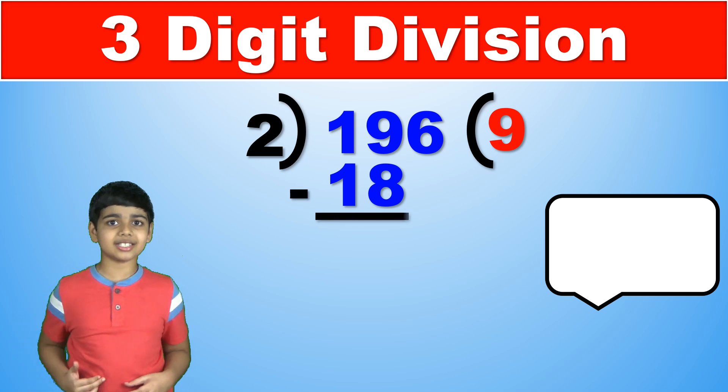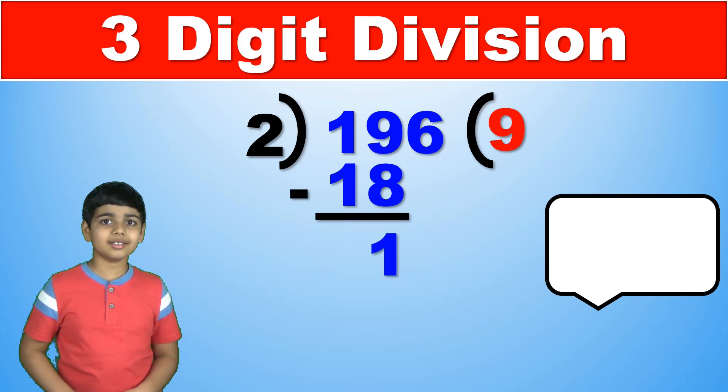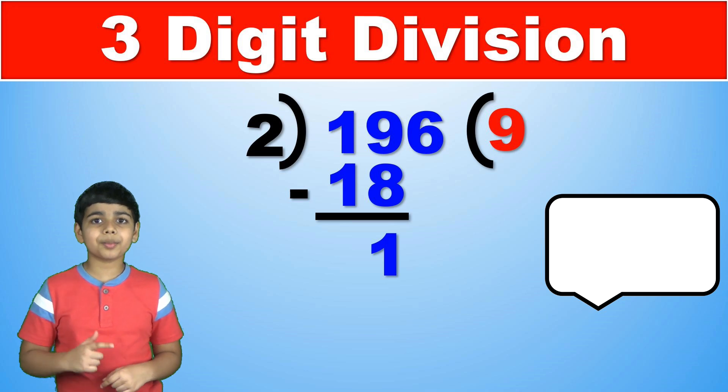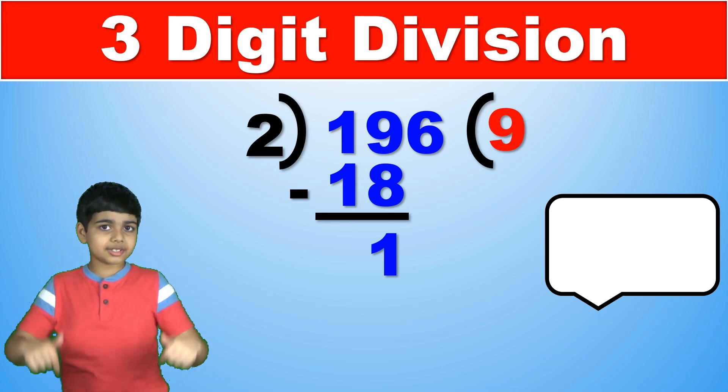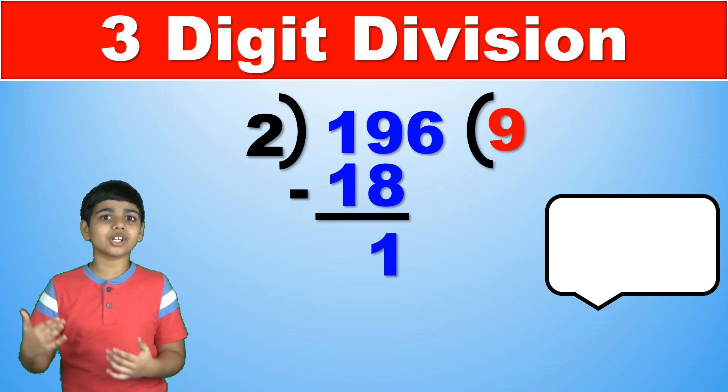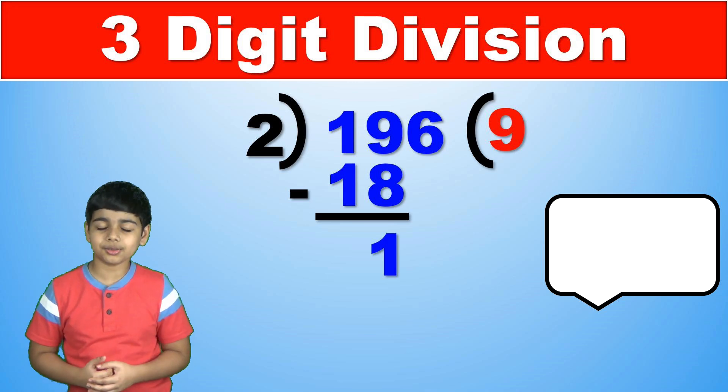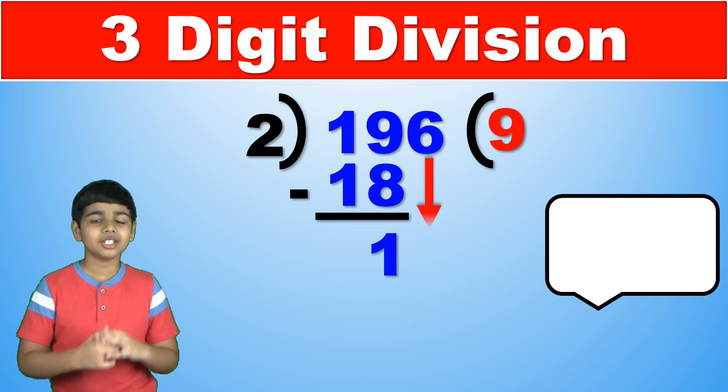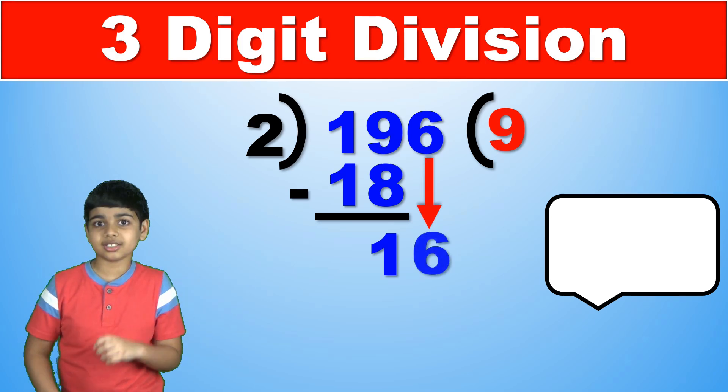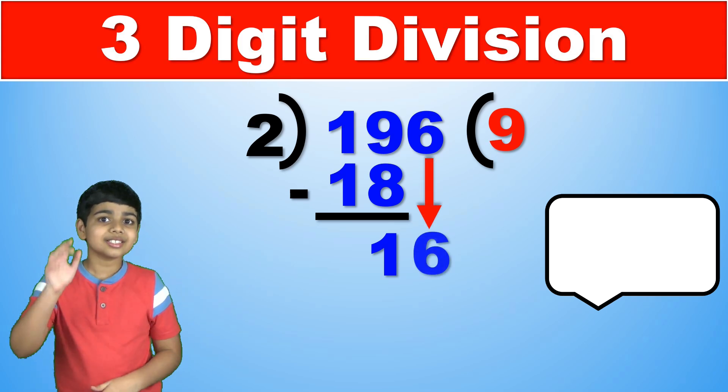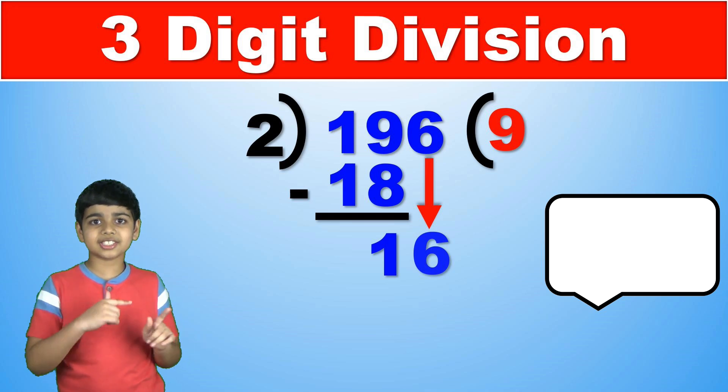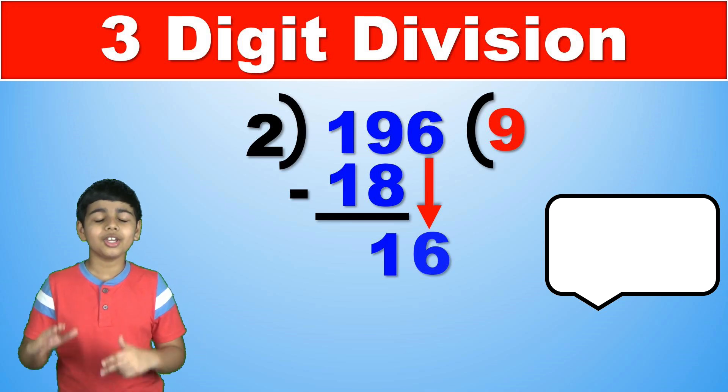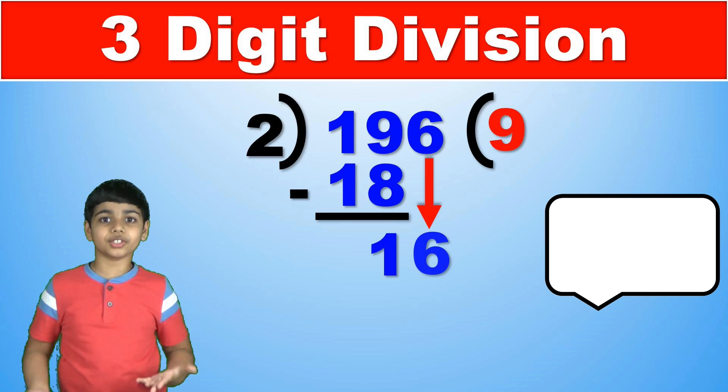Now we subtract 19 and 18 and we get 1, and now the final step of this cycle that we're going to repeat is we drop down the next digit of the original number. So in that case that would be 6. So we drop down the 6 and now we have 16 and we can start the cycle over again.